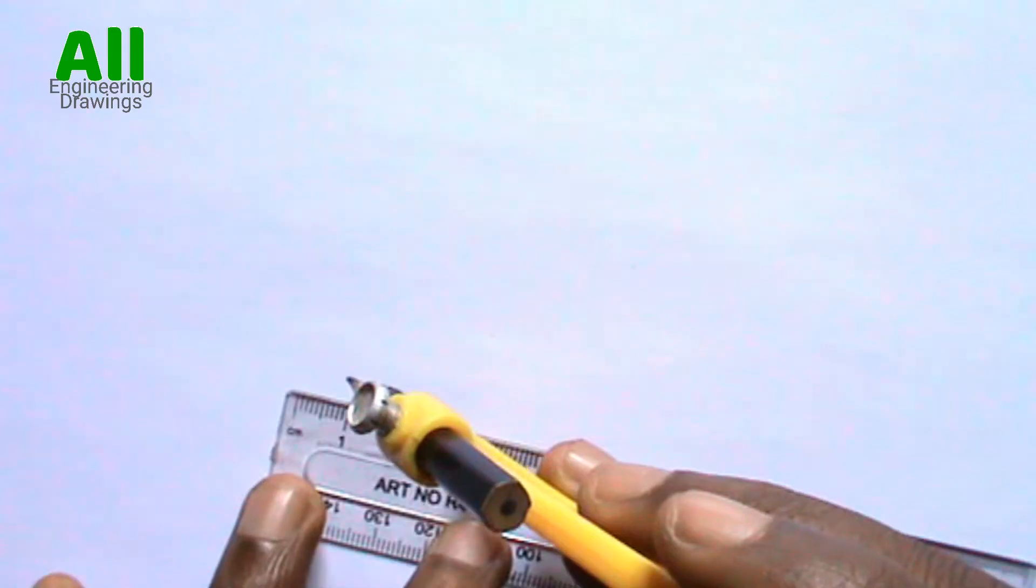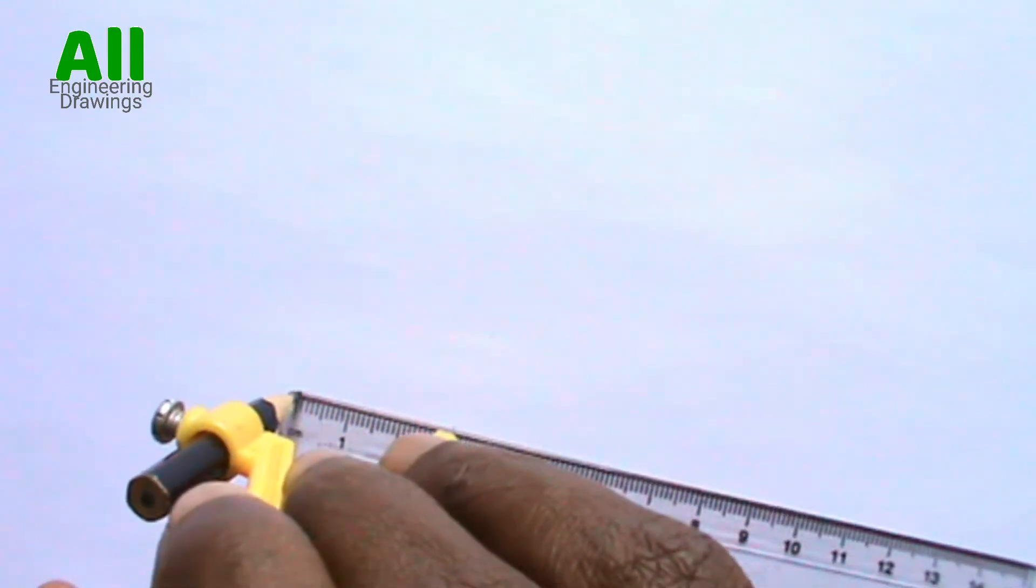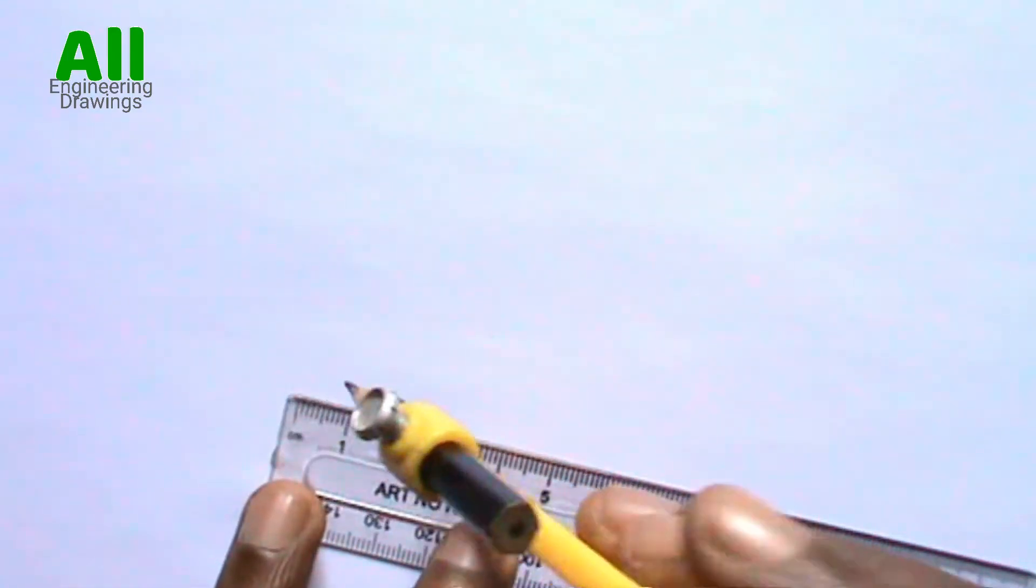To draw a cycle, you have to use your compass to take the required radius from your ruler this way. Then you have to now draw your cycle.